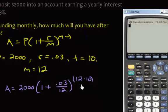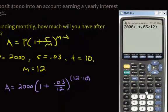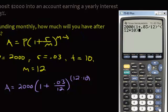In the calculator, type 2000, then open parentheses, 1 plus 0.03 divided by 12, close parentheses, then use the caret for the exponent. Because there are multiple things in the exponent, put parentheses around it: (12 × 10). The result is $2,698.70, rounded to the nearest cent.